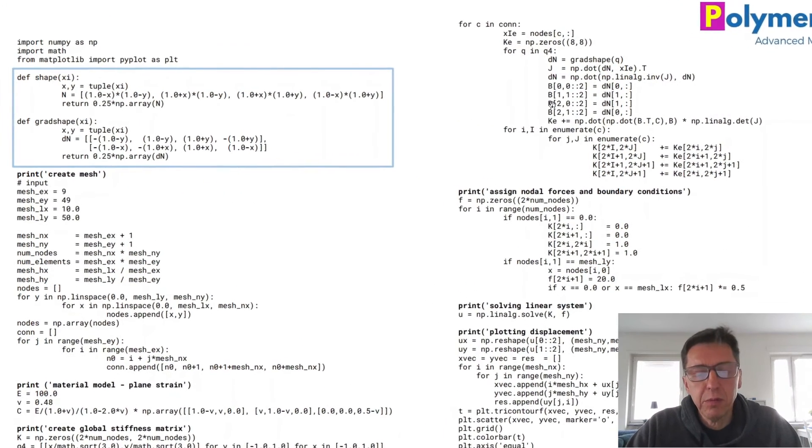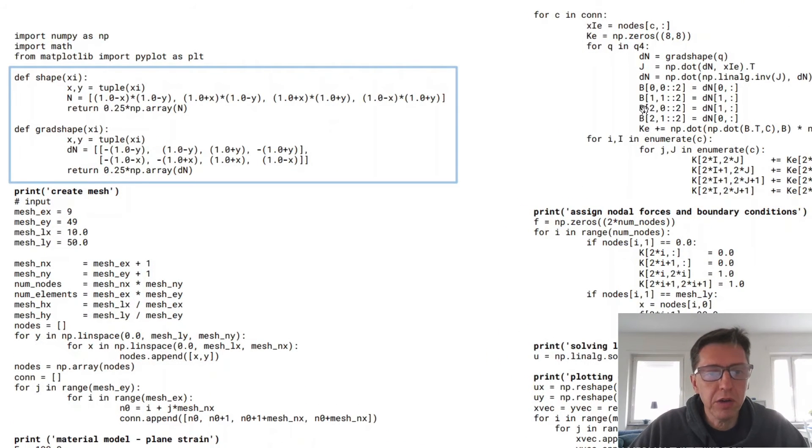So here is the one page of code. This is Python code. It starts from the top and goes down and then it continues on the right. This is the complete finite element solver code. And there are different sections to it that I'm going to flip through very quickly here.